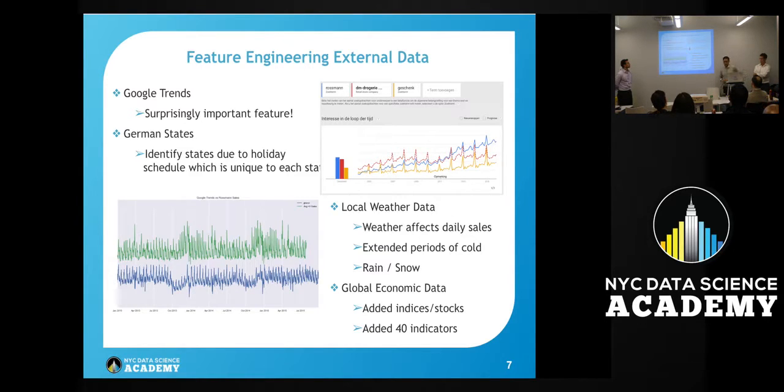Finally, we added global economic data. Three or four of these indicators were very important. The best was the DAX, which is the German equivalent of the S&P 500, the main index of the country. That was very correlated with sales. We also added indicators like population growth, GDP growth, leading indicators, business health, small and medium companies. We added a total of about 250 features.